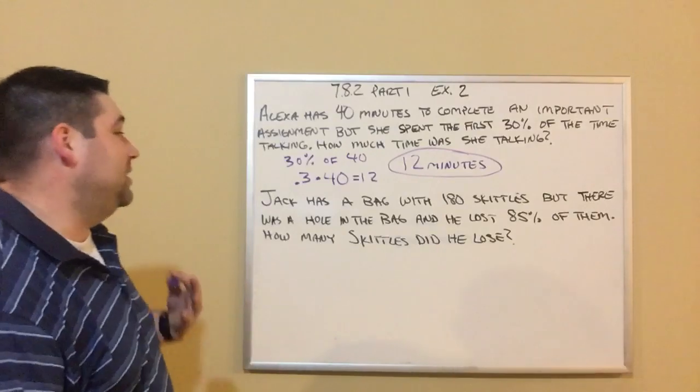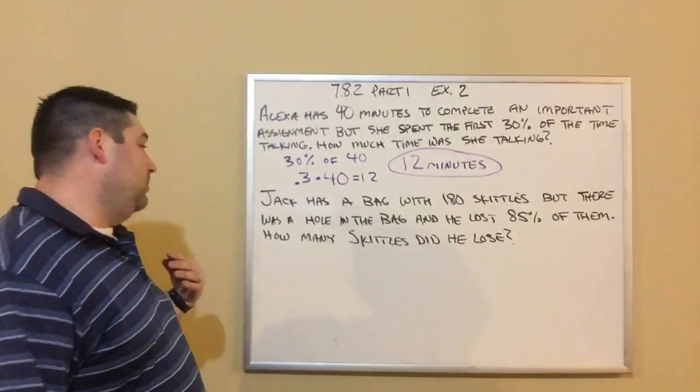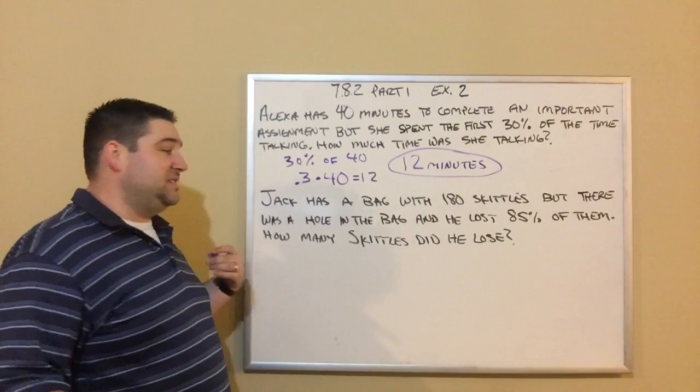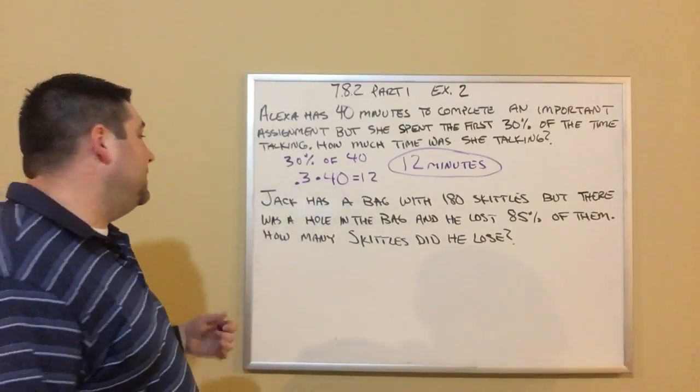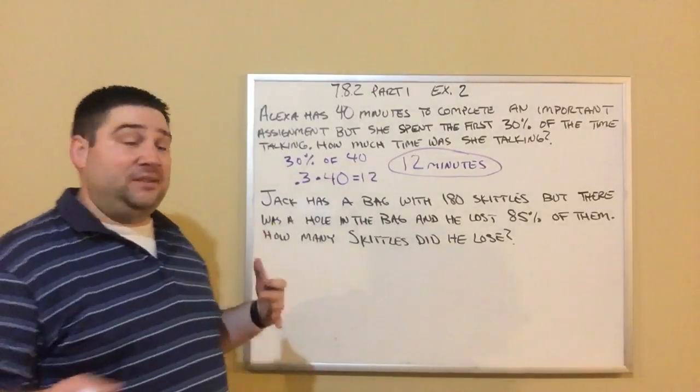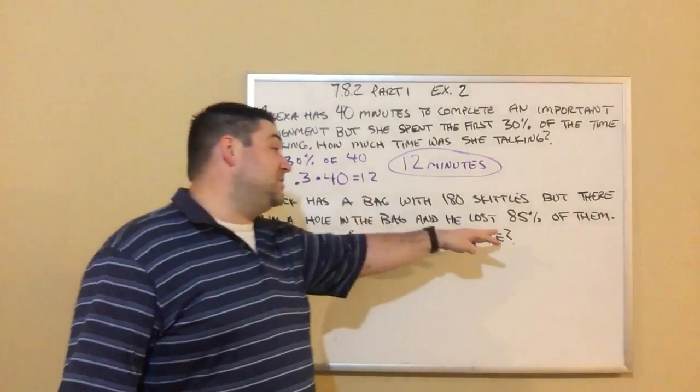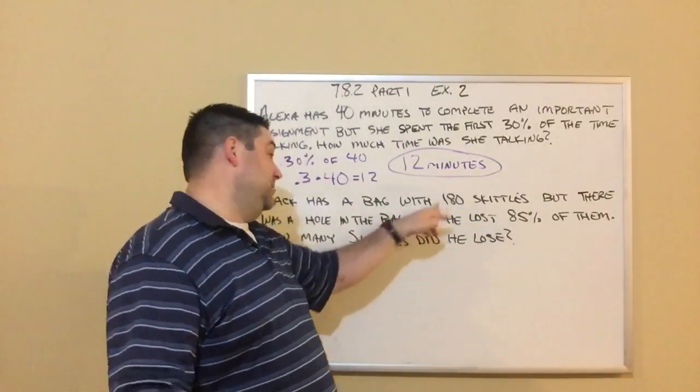Jack has a bag with 180 Skittles, but there was a hole in the bag and he lost 85% of them. How many Skittles did he lose? So again, it's the same idea. We're finding a percent of a number. We're finding 85% of the total amount of Skittles, which was 180.